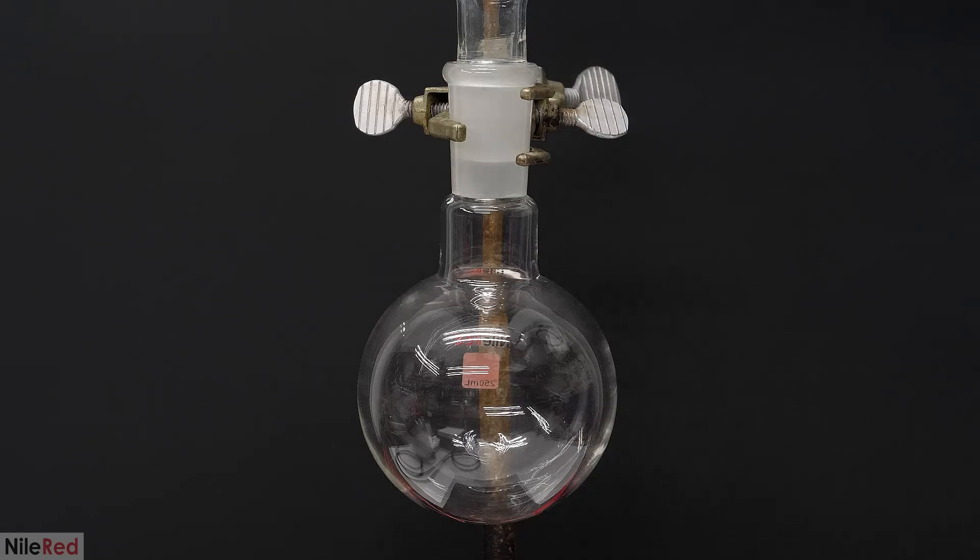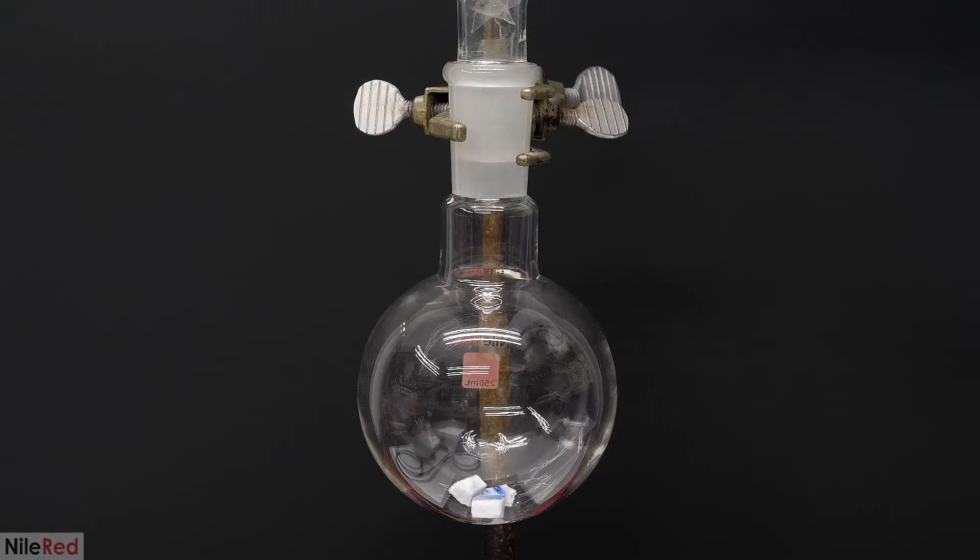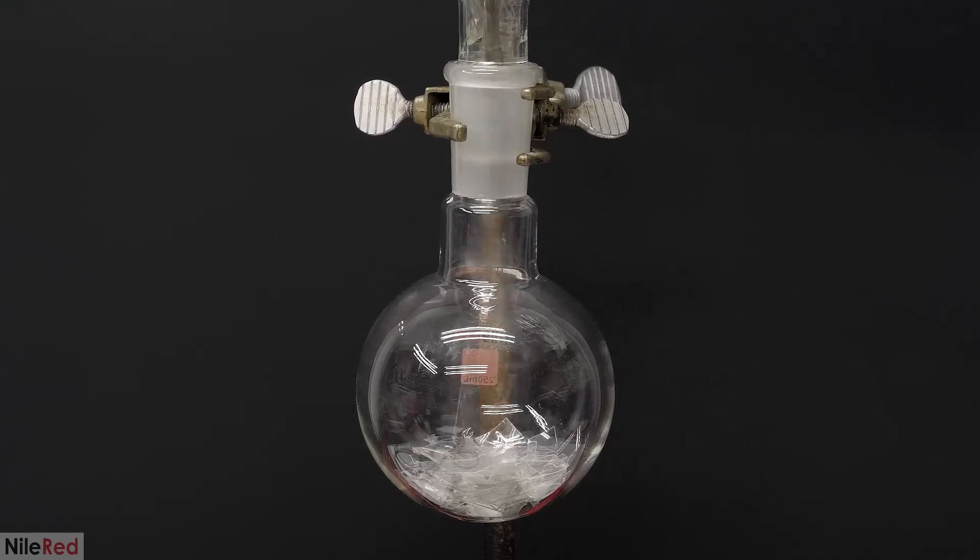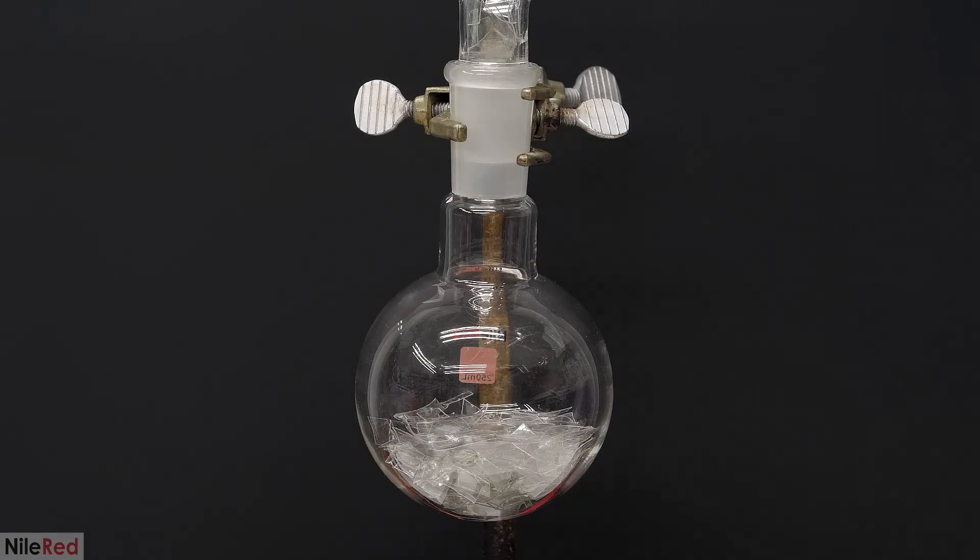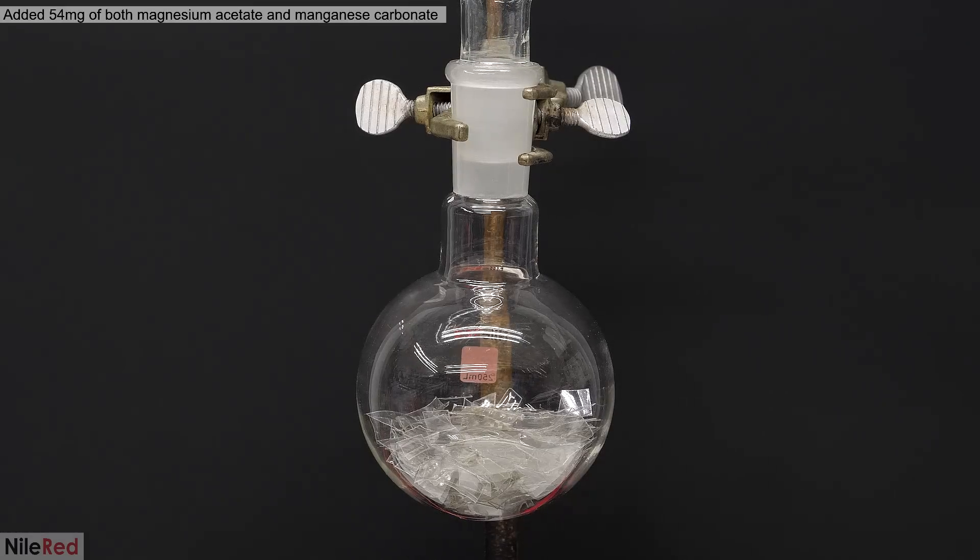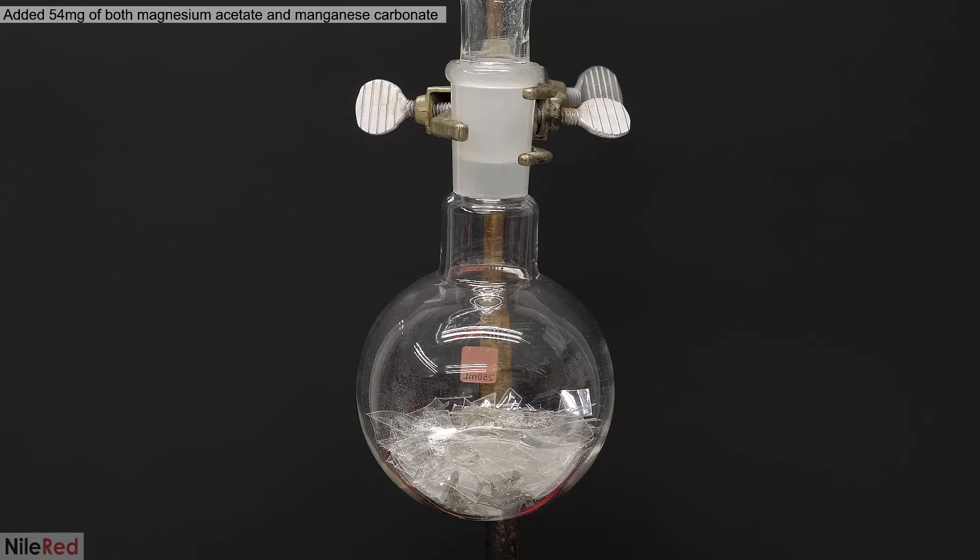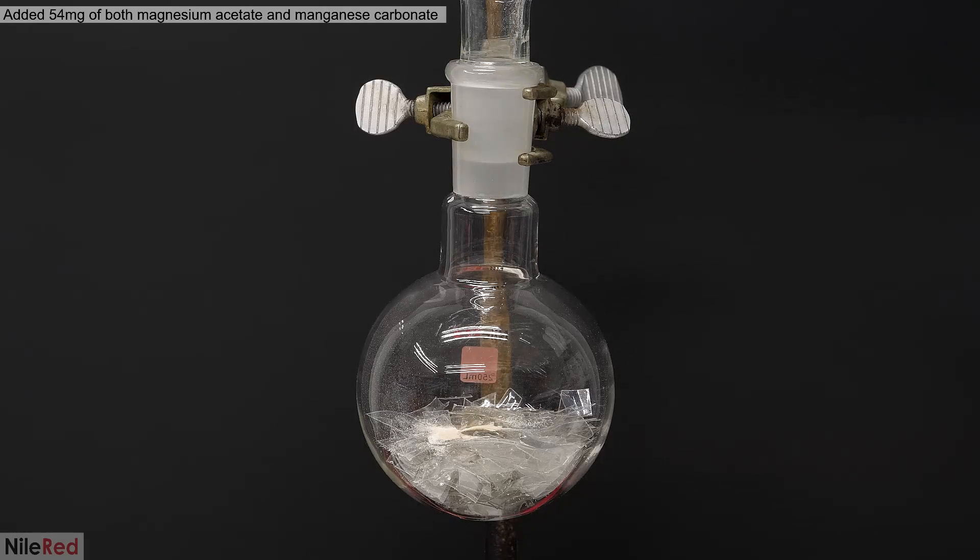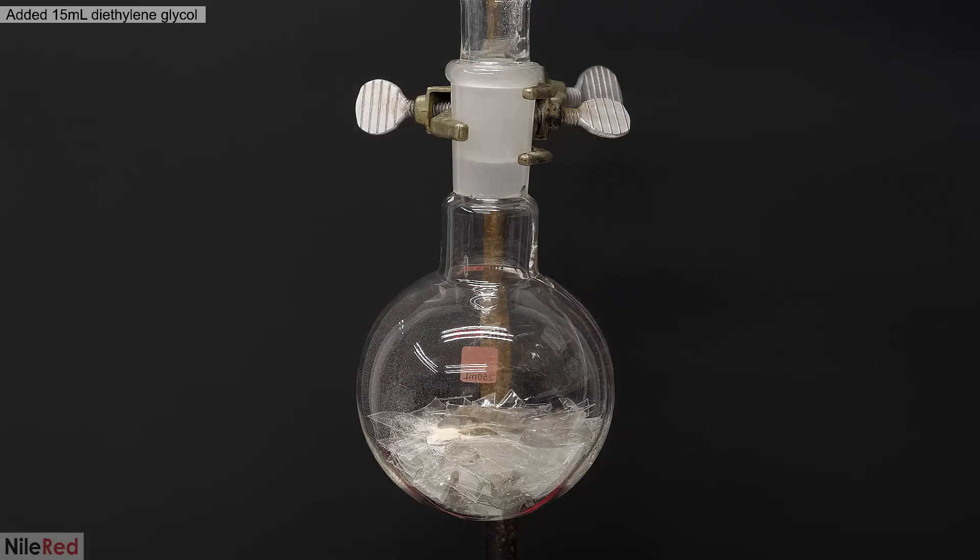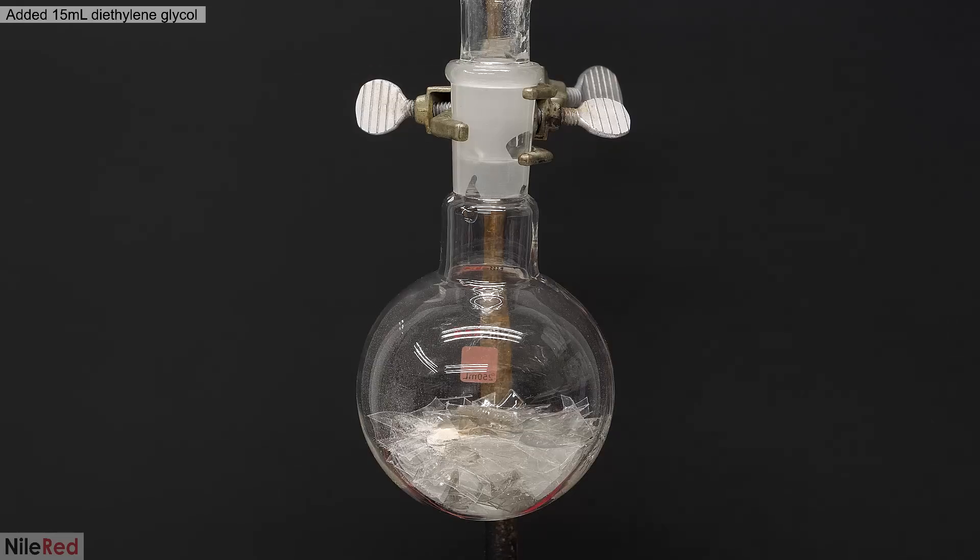Into a flask, I added some boiling chips that I got by smashing a porcelain plate. Then I added all the plastic, which actually ended up kind of being a pain, because the pieces kept getting stuck in the neck. This was totally my fault though, and it was just because I didn't cut them up small enough. In any case, when it was eventually all inside, I added magnesium acetate and manganese carbonate, which were the catalysts for the reaction. Then on top of all of this, I poured in 15 milliliters of diethylene glycol.